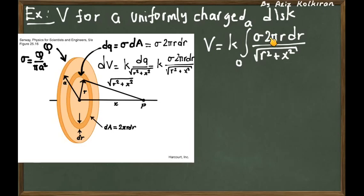So we got this expression and we can take the constants outside. And the result is k times 2 pi sigma, and in square root, r squared plus x squared is to be evaluated at r equals a and 0. And you can replace even k by 1 divided by 4 pi epsilon 0.